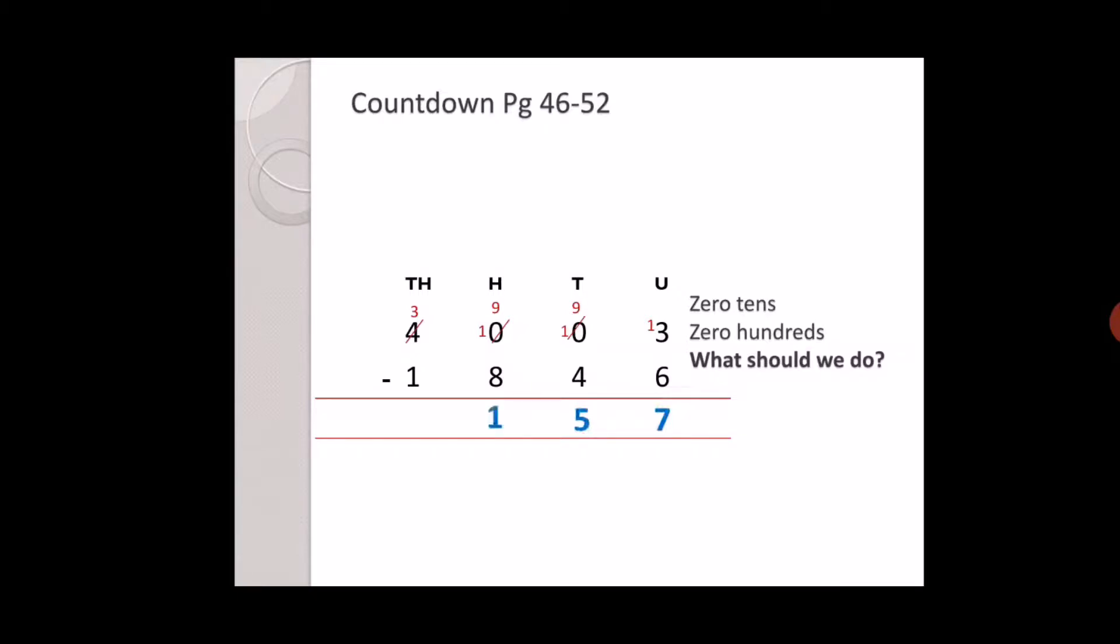Now we have to borrow for tens, so three minus one is two. The answer is two thousand one hundred fifty seven. I repeat.